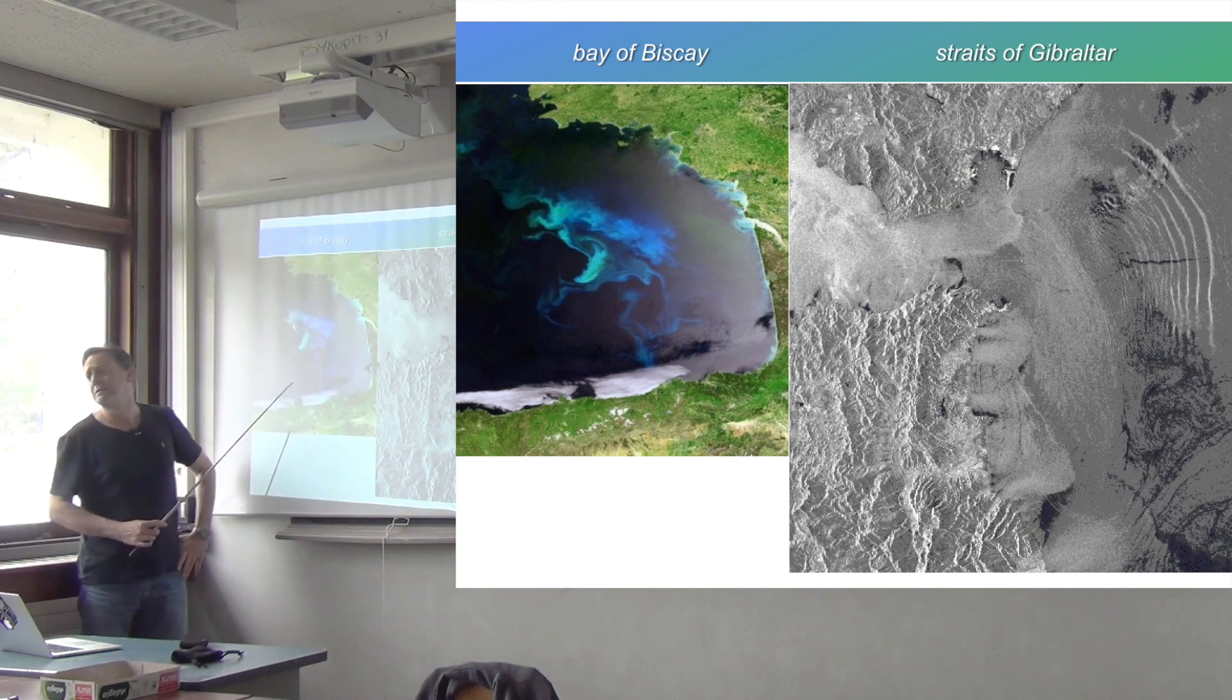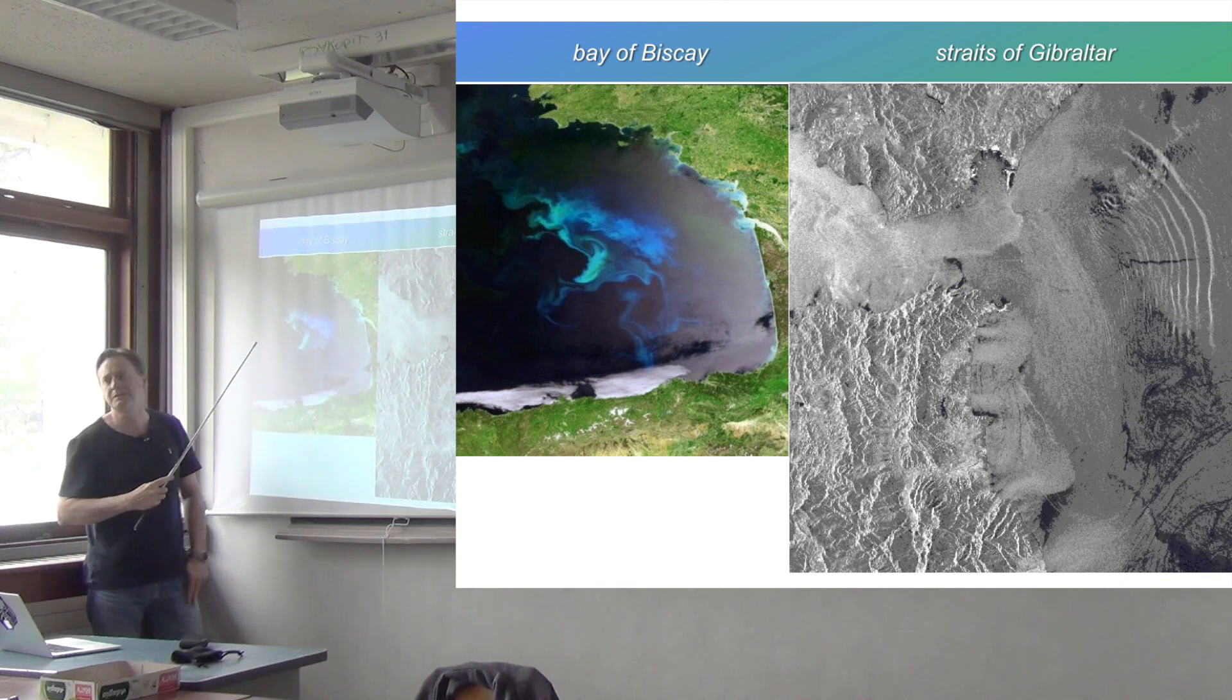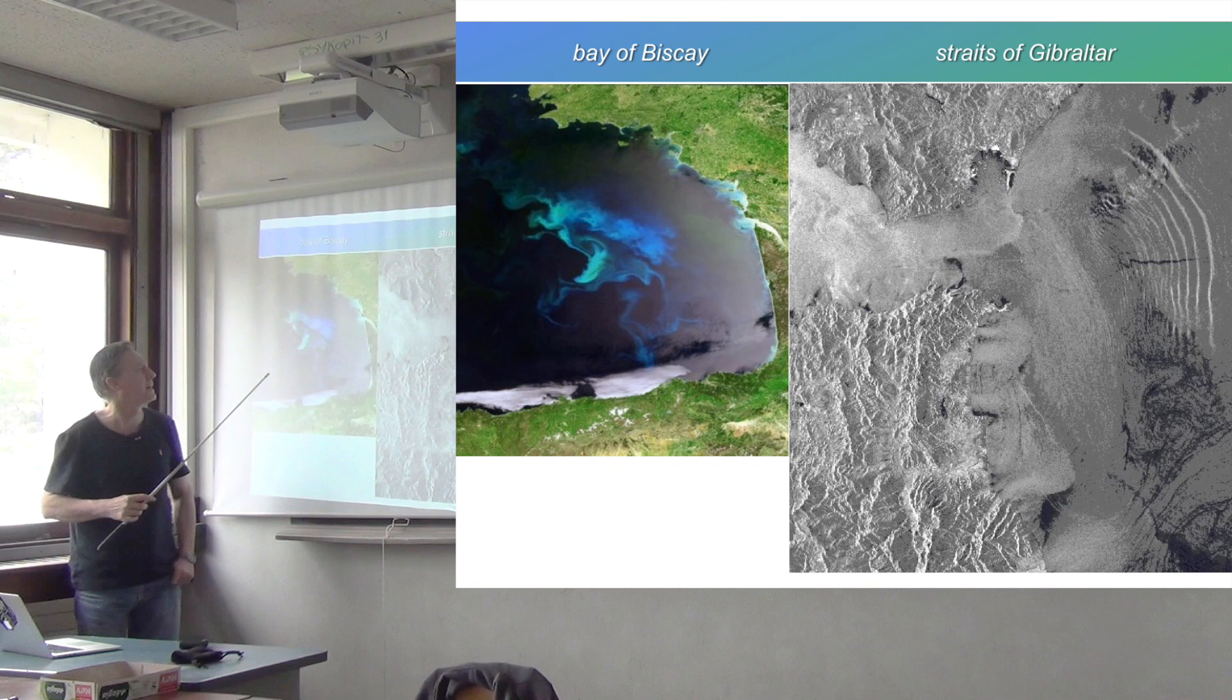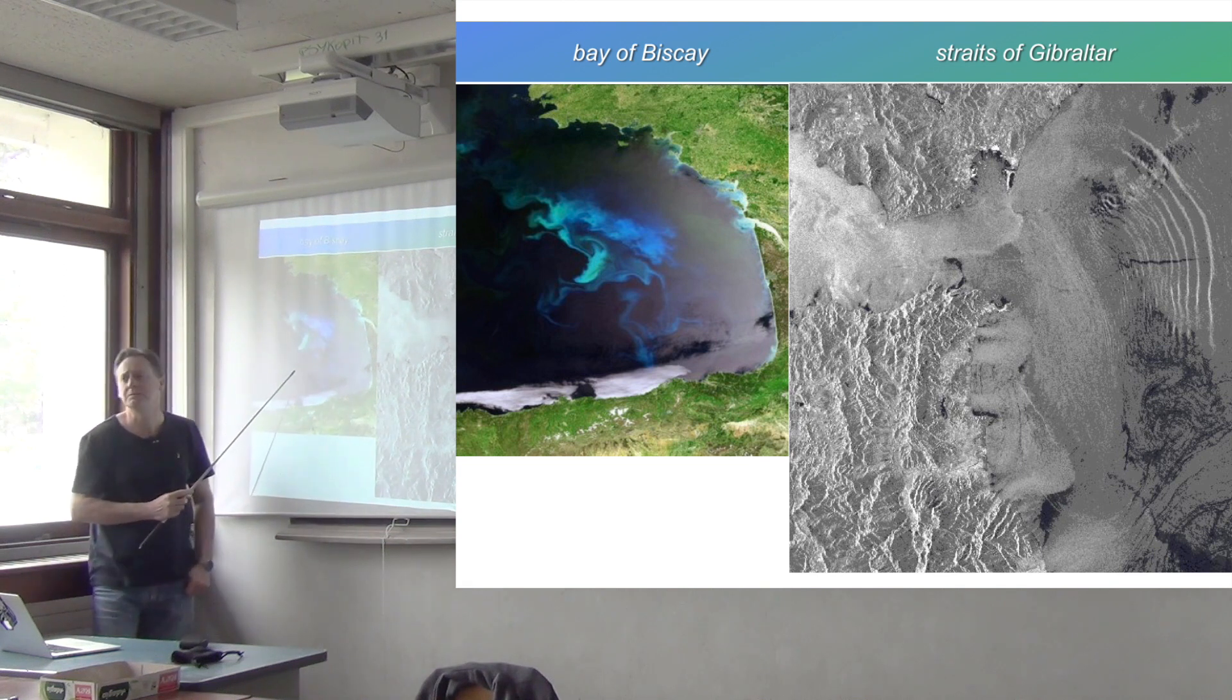Bay of Biscay, or Gulf de Gascoigne. It's a place where there's a very rapid change in depth. So here there's a very strong shelf break. You have a continental shelf, and then it plunges down to the deep ocean very quickly here. And it's a bit of a rough area because that shelf break can trigger internal waves, which propagate vertically to the surface. And they create disturbed conditions at the surface.